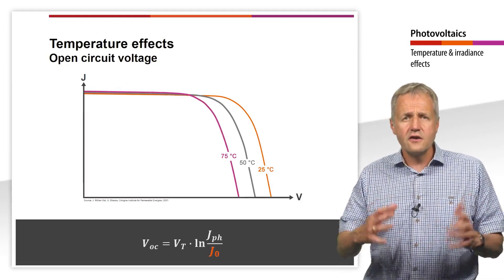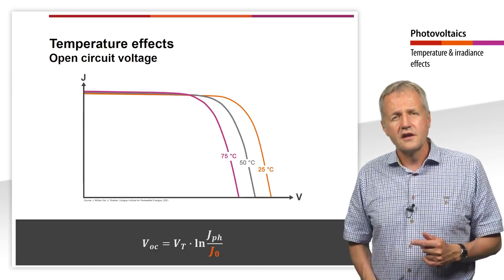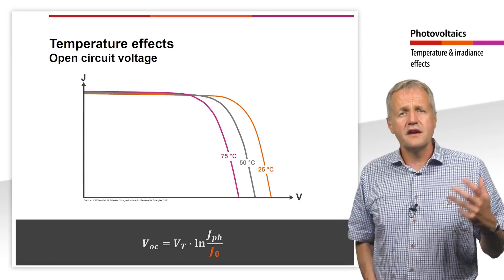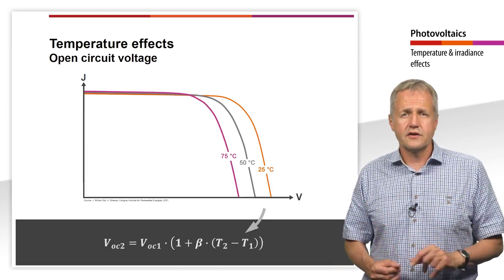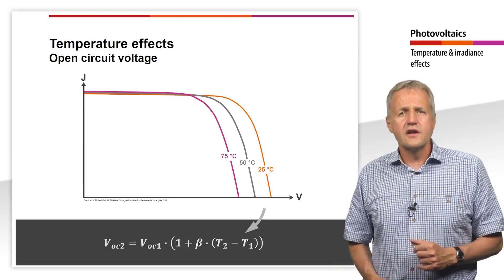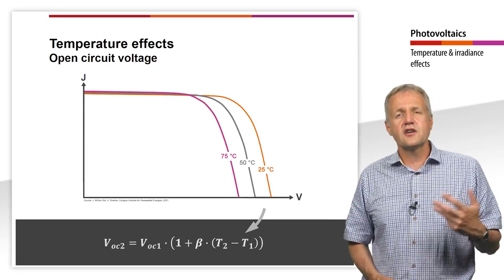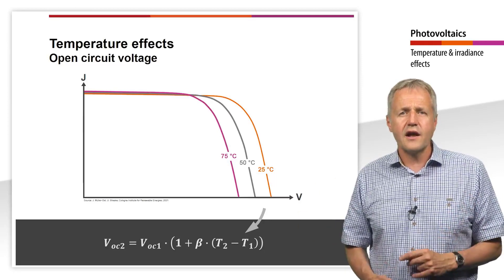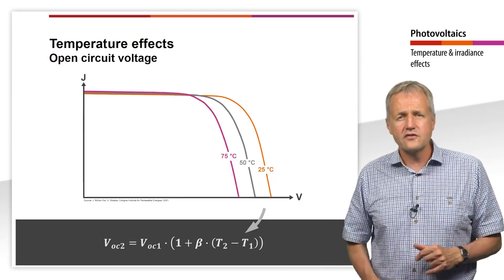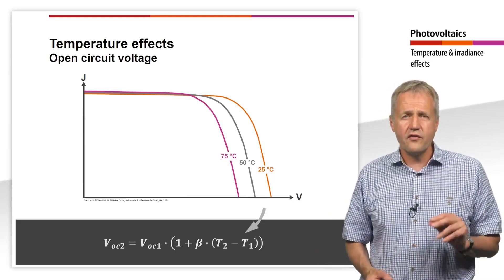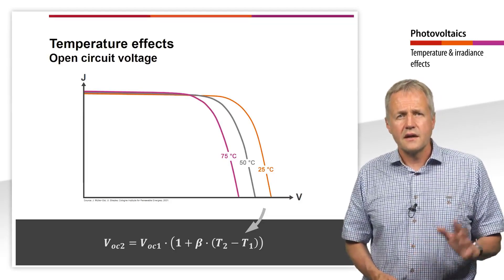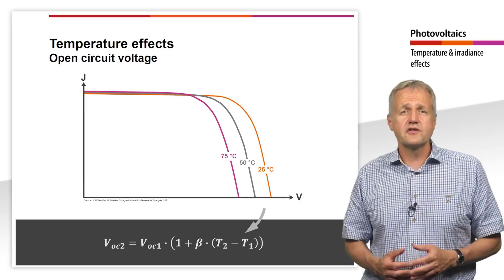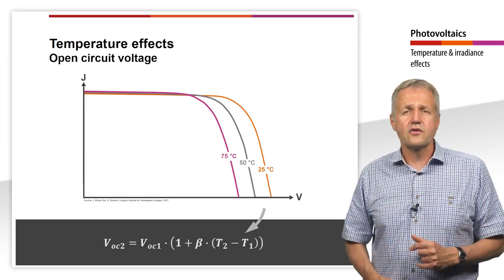Just as with the short-circuit current, a linear dependence on temperature can be derived for the open-circuit voltage. This dependence is described by a temperature coefficient denoted by beta. Beta indicates the change in open-circuit voltage per degree Kelvin, and is also usually related to the open-circuit voltage at STC and given in percent per Kelvin. Since the open-circuit voltage decreases with increasing temperature, beta always has a negative value. Typical values for silicon solar cells are about minus 2.2 mV per Kelvin or minus 0.35% per Kelvin. Note that the temperature coefficient refers only to the open-circuit voltage; a linear relationship can also be established for the MPP voltage, but a different coefficient would be needed.